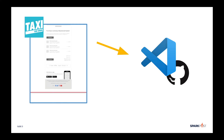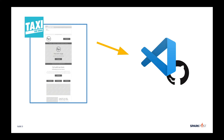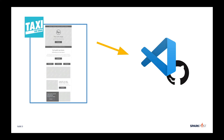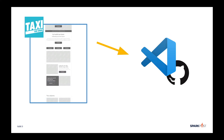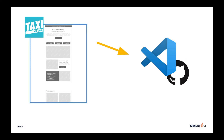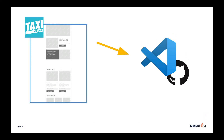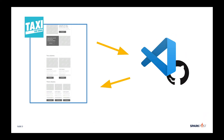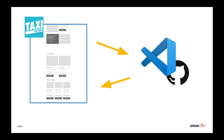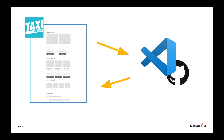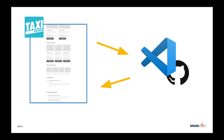The usual process will be to download or locate your saved HTML, and then make the changes, test the code, and manually upload the HTML back into Taxi.